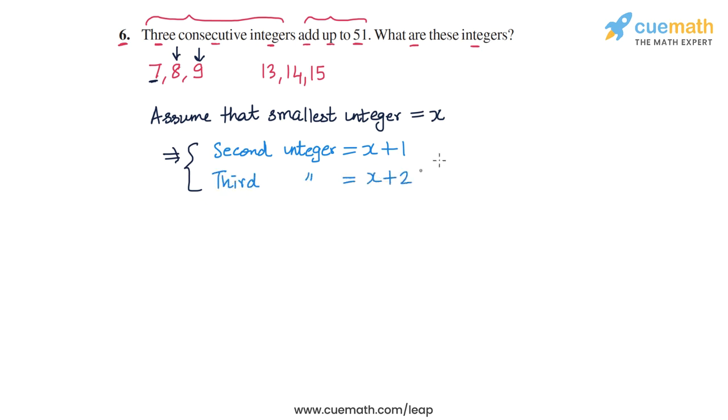So basically, what we have is we have written the three consecutive integers as x, x plus one, and x plus two.